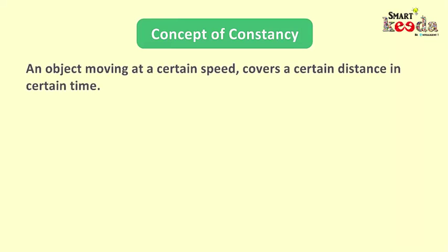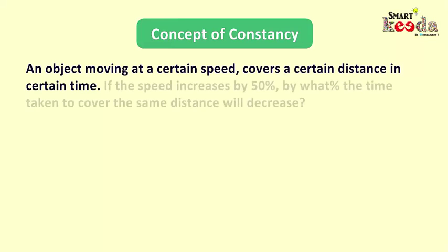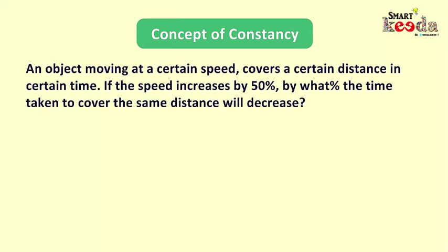In this scenario, an object moving at a certain speed covers a certain distance in certain time. If the speed increases by 50%, by what percent the time taken to cover the same distance will decrease? Here we have two variables, speed and time, and in this particular scenario speed is increasing by 50% and we are required to find the proportional decrease in time.